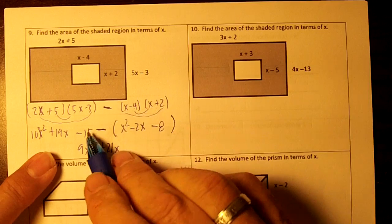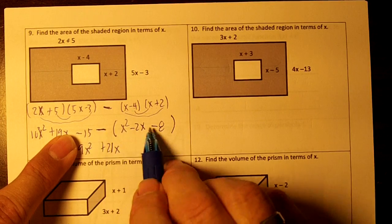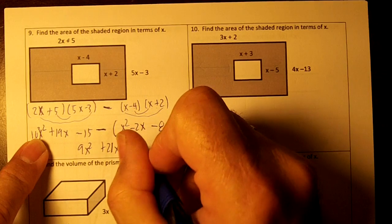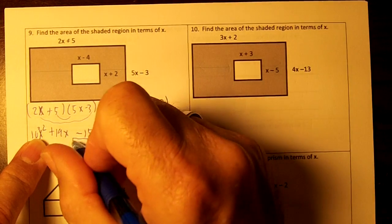I'm kind of skipping some steps here. Negative 15 minus a negative 8. Two negatives make a positive. Negative 15 plus 8 is a negative 7. So this right here is the difference of the squares.